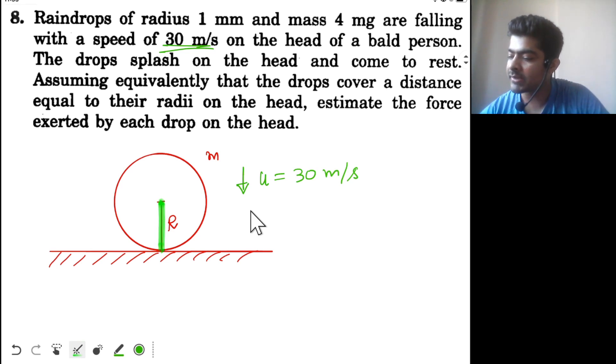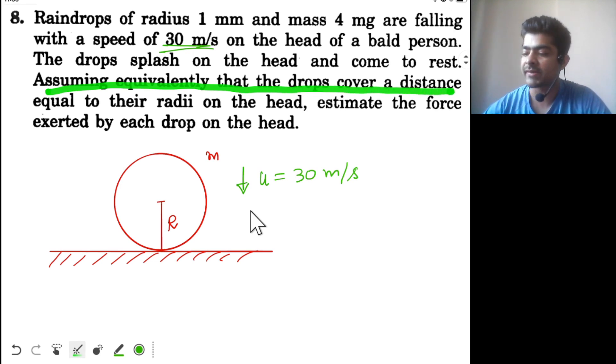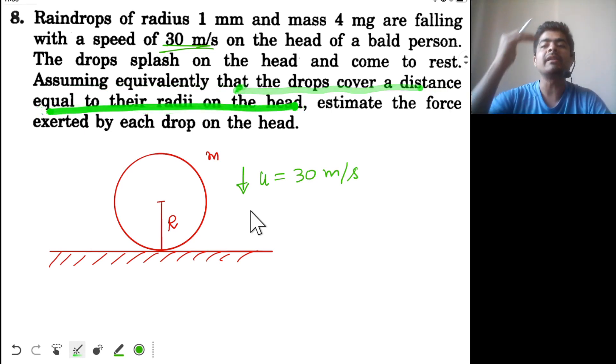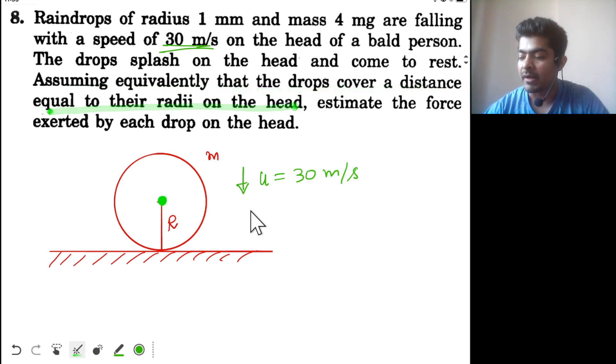While decelerating, it covers a distance equal to r. That's what is given in the question. The drop covers a distance equal to radius to completely come to rest. So final velocity is zero, distance covered by the drop will be r.